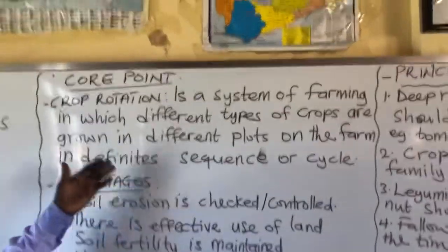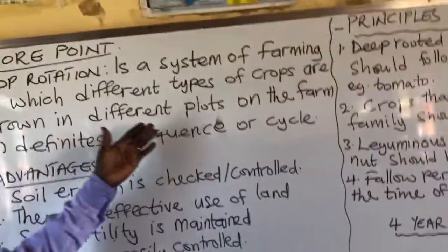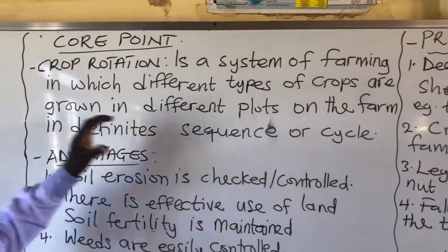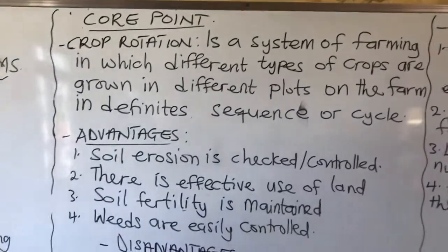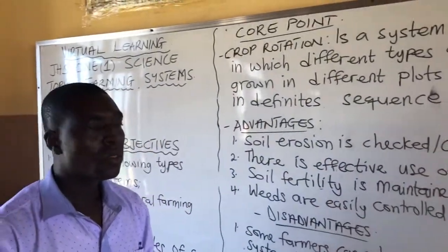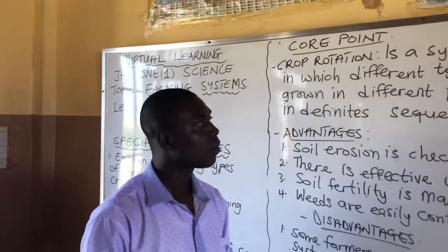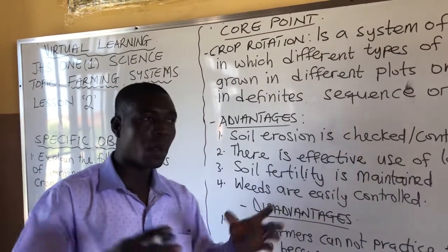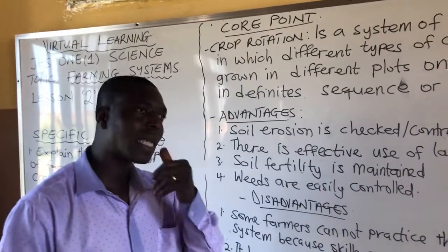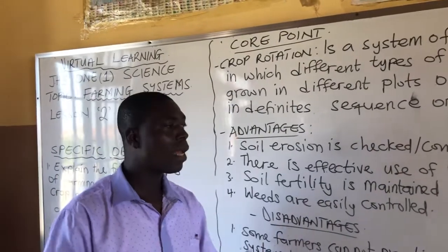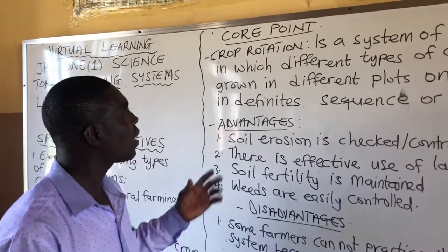What is crop rotation? Crop rotation is a system of farming in which different types of crops are grown in different plots on the farm in a definite sequence or cycle. It means that if you have a farm or a piece of land, you divide that land into plots and plant different crops. We have different types of crops — you can mention some: we have yam, we have cowpea, we have tomato, and the rest that you can mention. That is crop rotation.